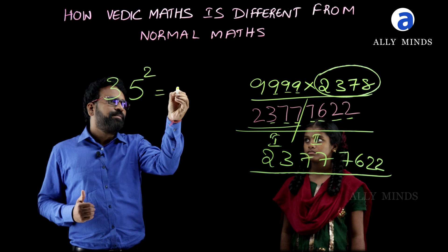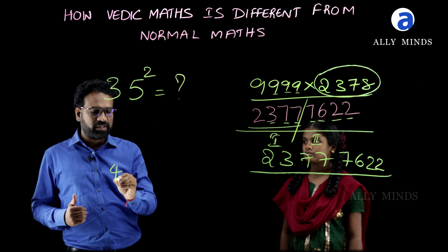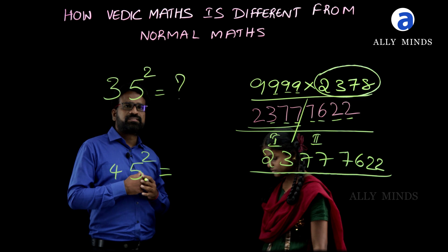First problem: Janani, are you ready? Yes sir. 35 square, and second problem is 45 square. Write the answer.